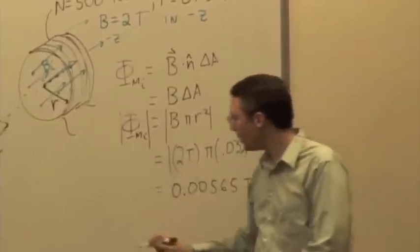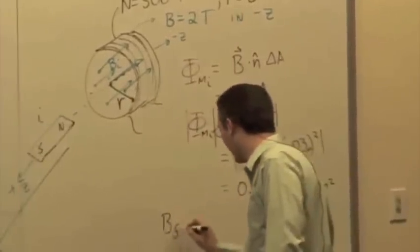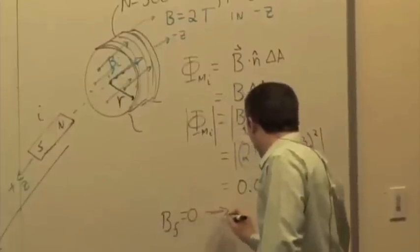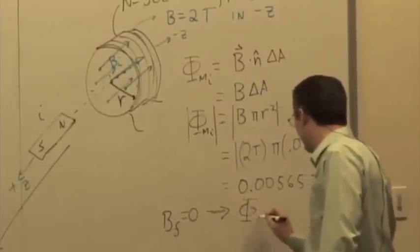If I move it very far away, what's the final magnetic field in the coil? Zero. So B final is zero, and therefore the final flux is going to be zero.